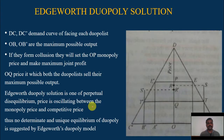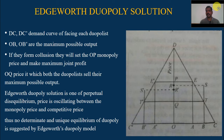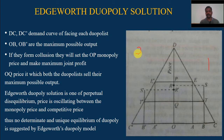Now we will discuss in detail with the help of a graph. Here, DC and DC1 are the demand curves facing each duopolist — Duopolist 1 and Duopolist 2. Each demand curve faces downward sloping.